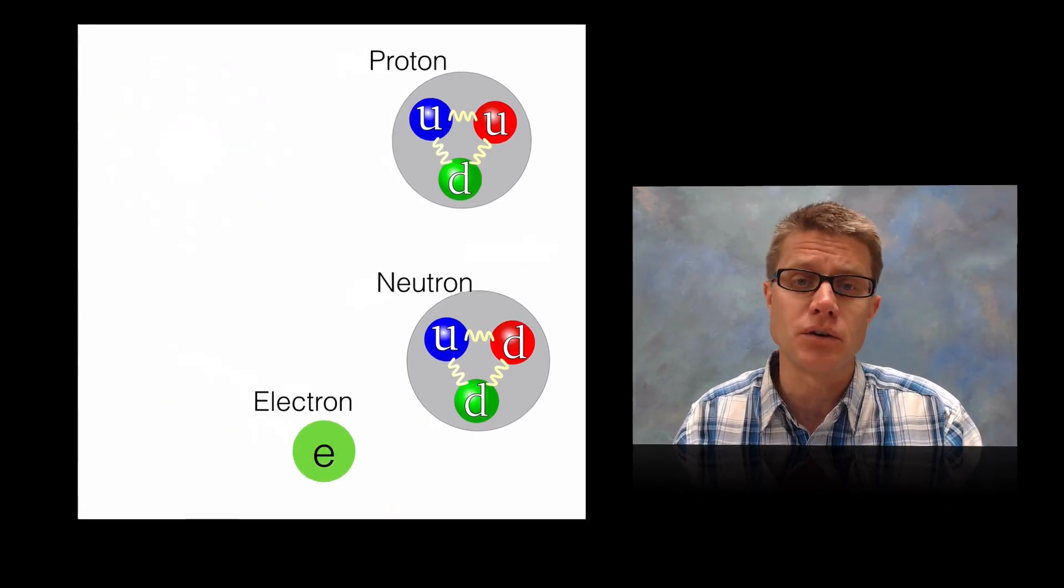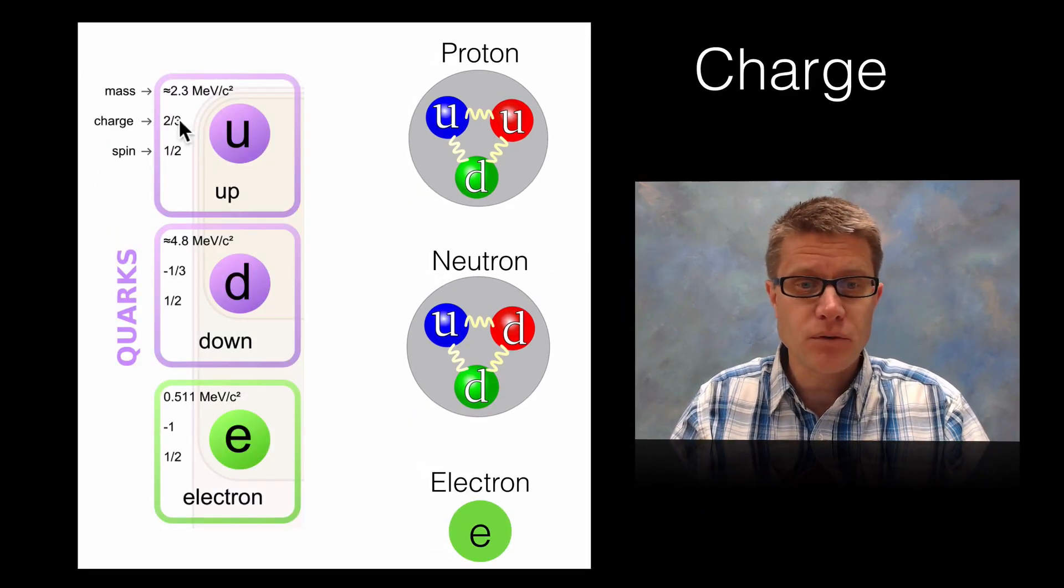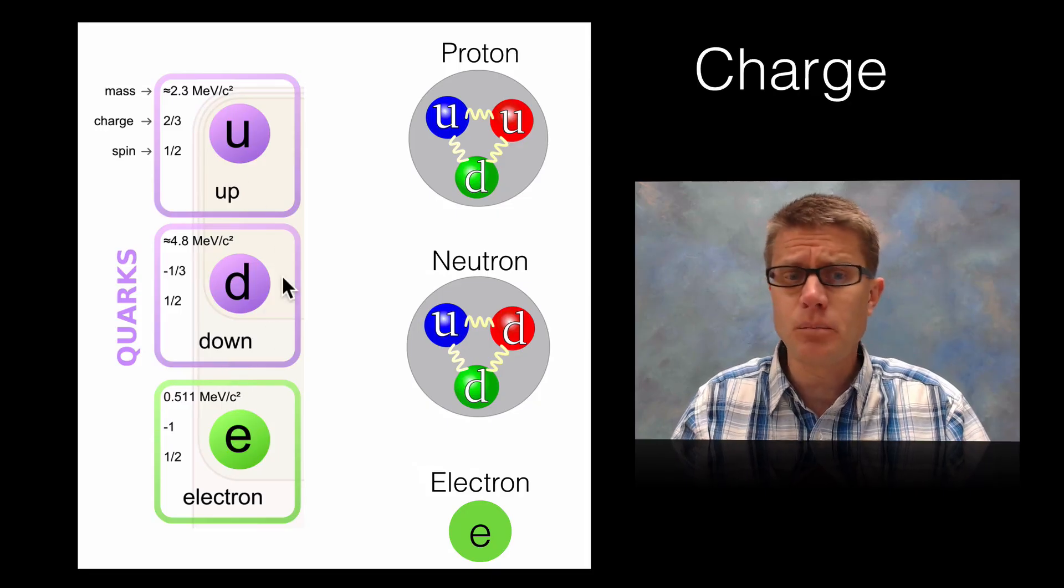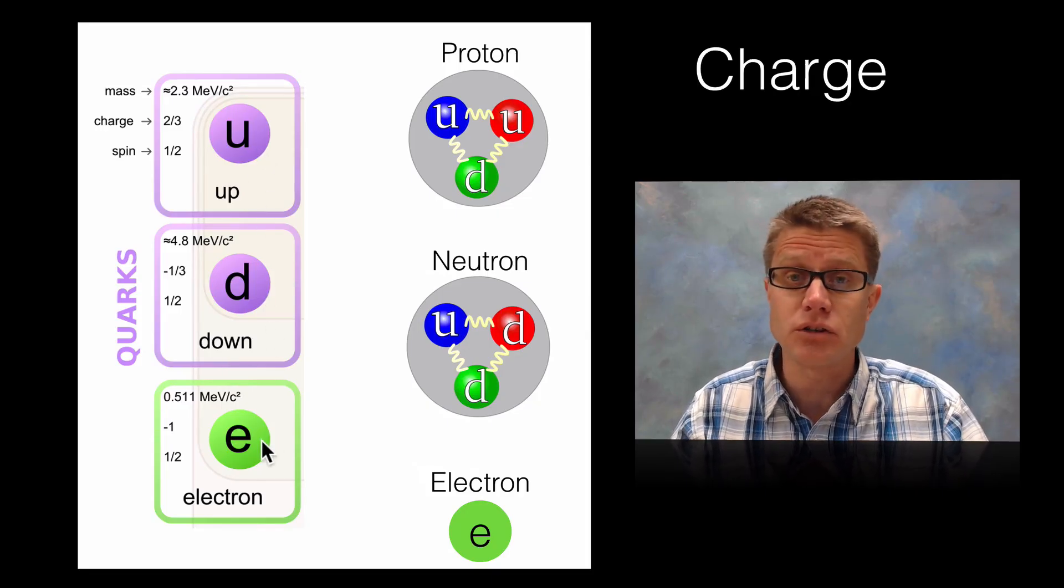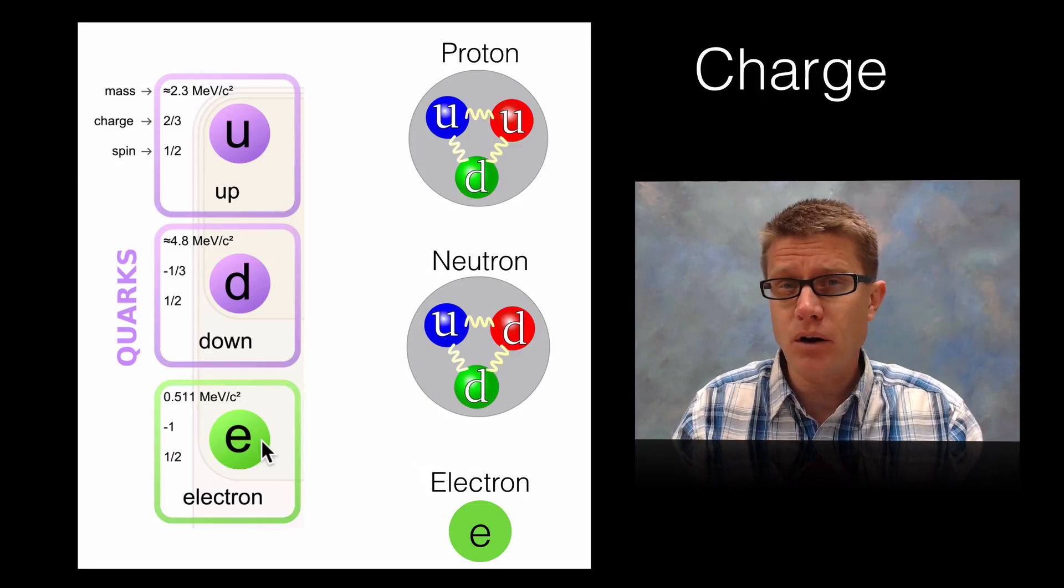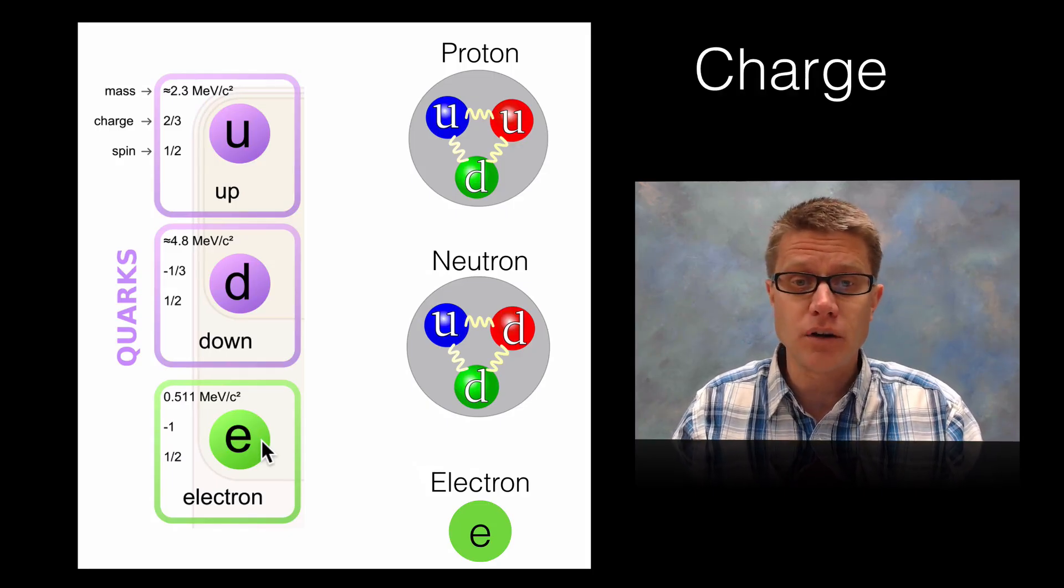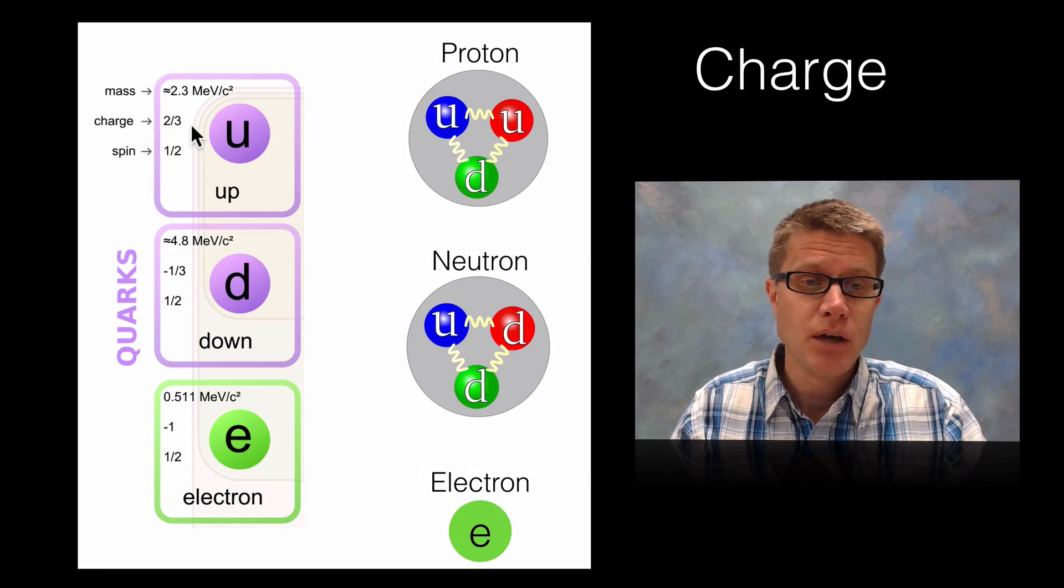So let's talk about charge for example. And so here are three fundamental particles. We have got an up quark, a down quark and an electron which is also a fundamental particle. And so if we want to figure out where the charge of a proton for example comes from we could look at the charge of each of these quarks.